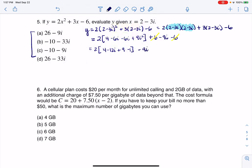So we're going to have 2 times—this is 4 minus 12i, 9 times negative 1 is negative 9, minus another 9i. So this will be 2 times, all right, 4 minus 9 is negative 5.